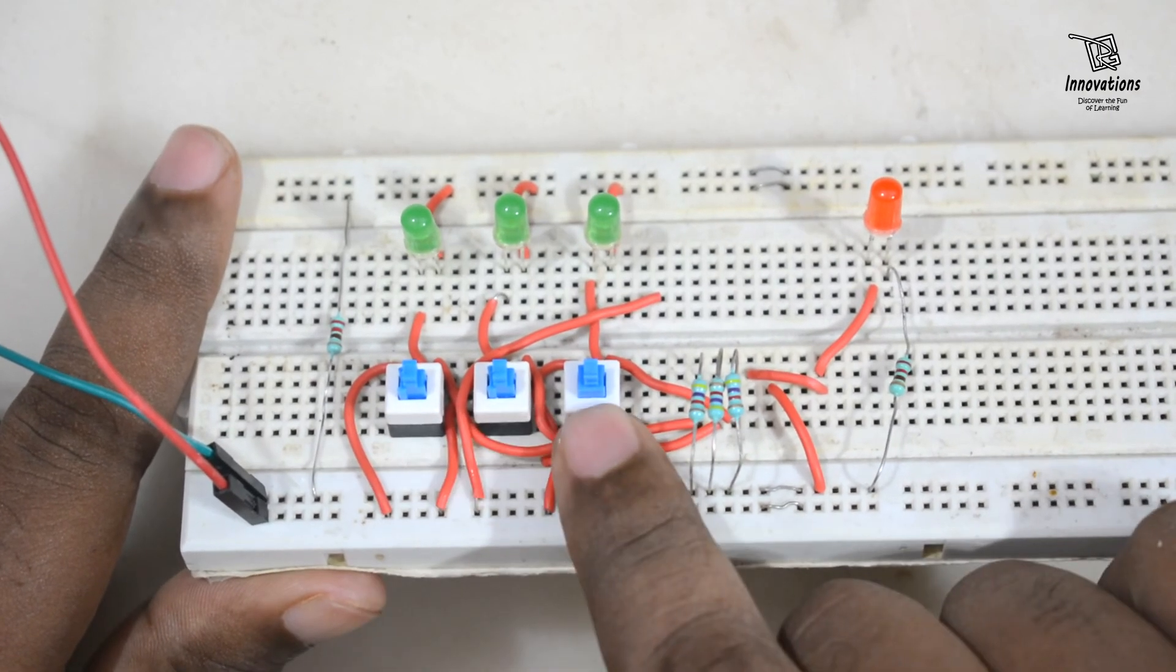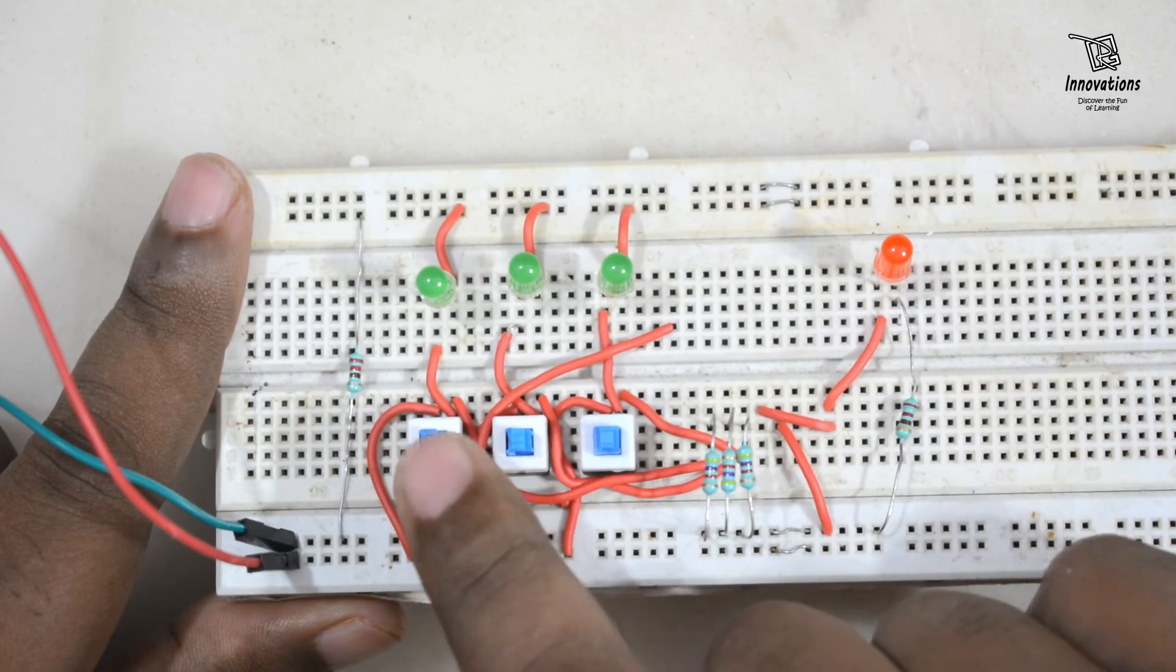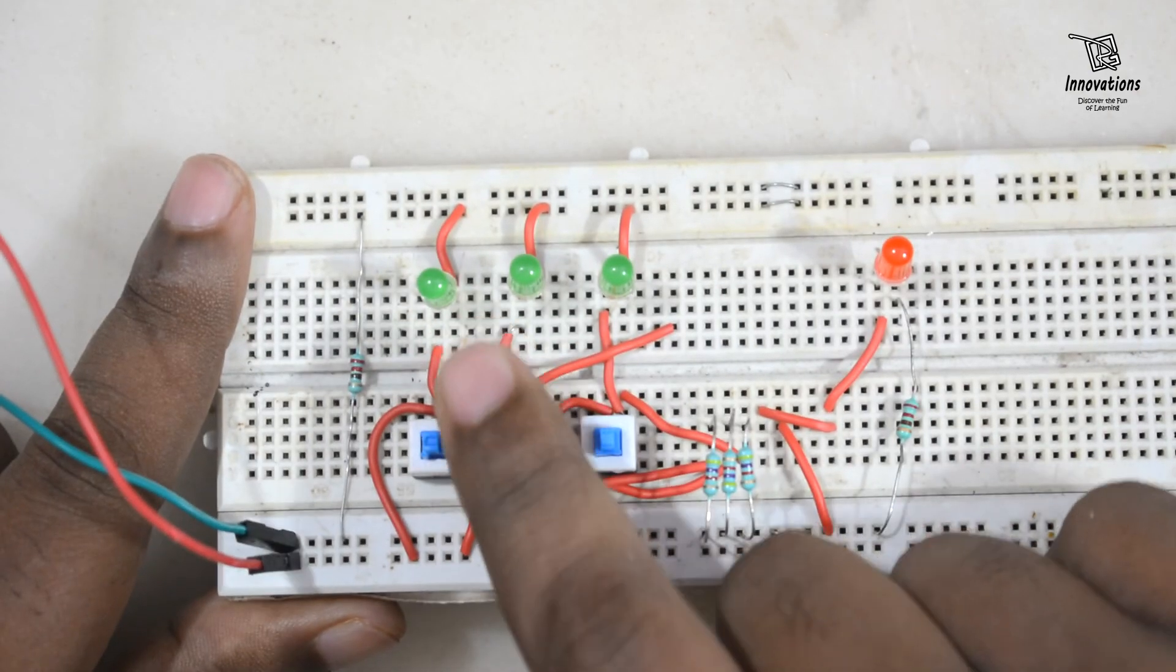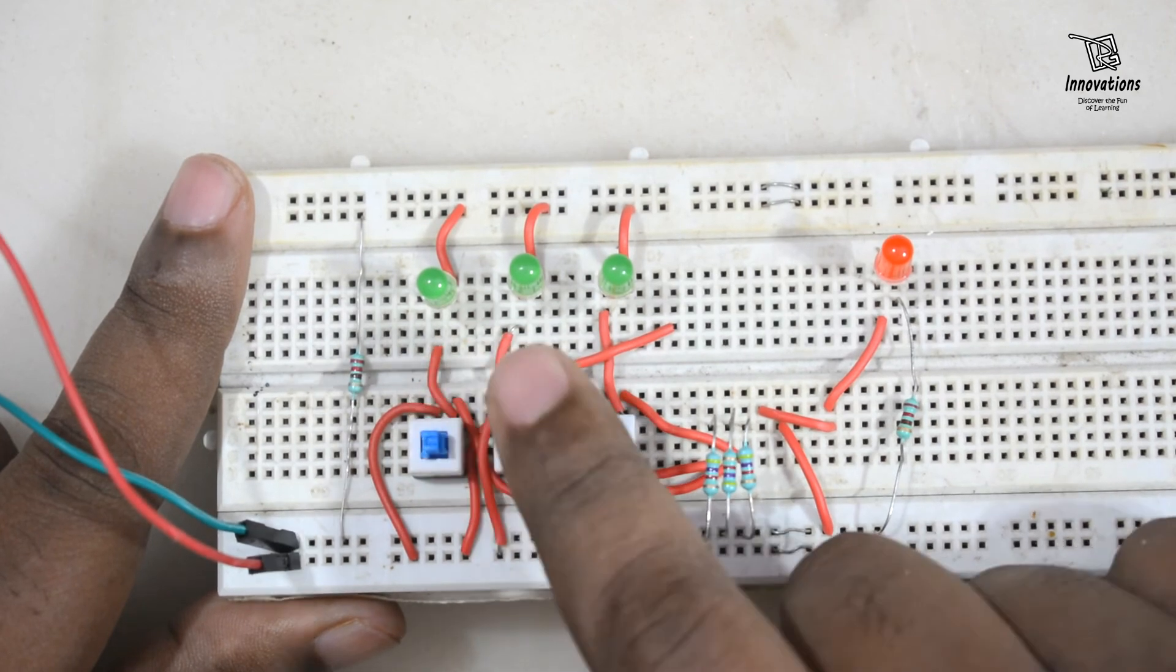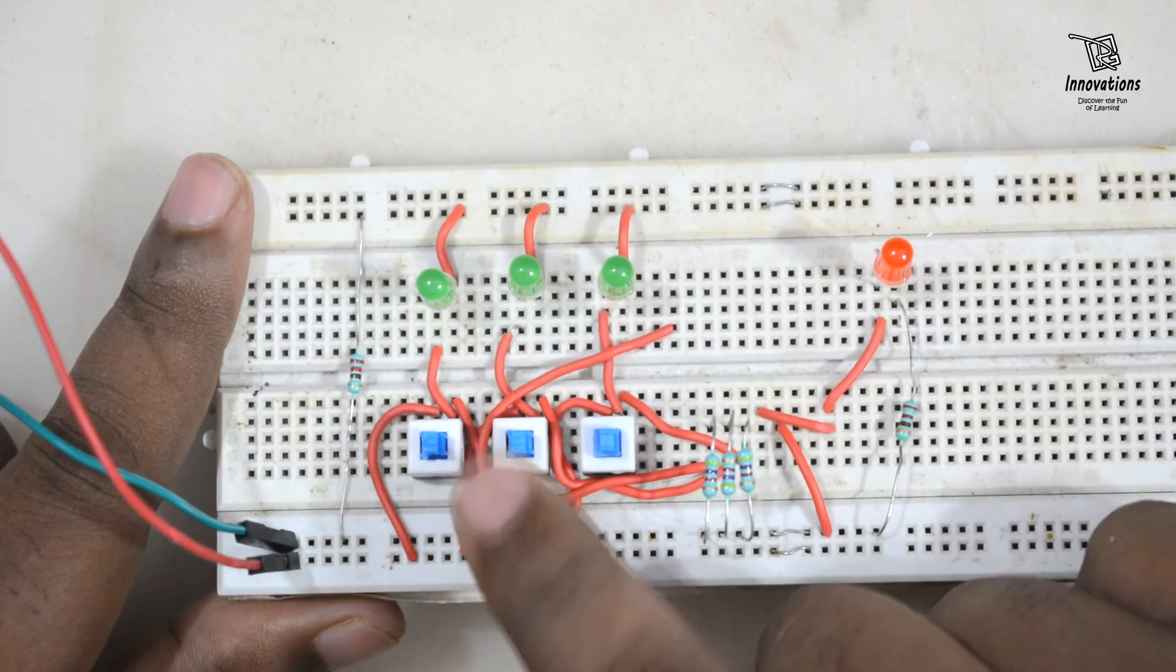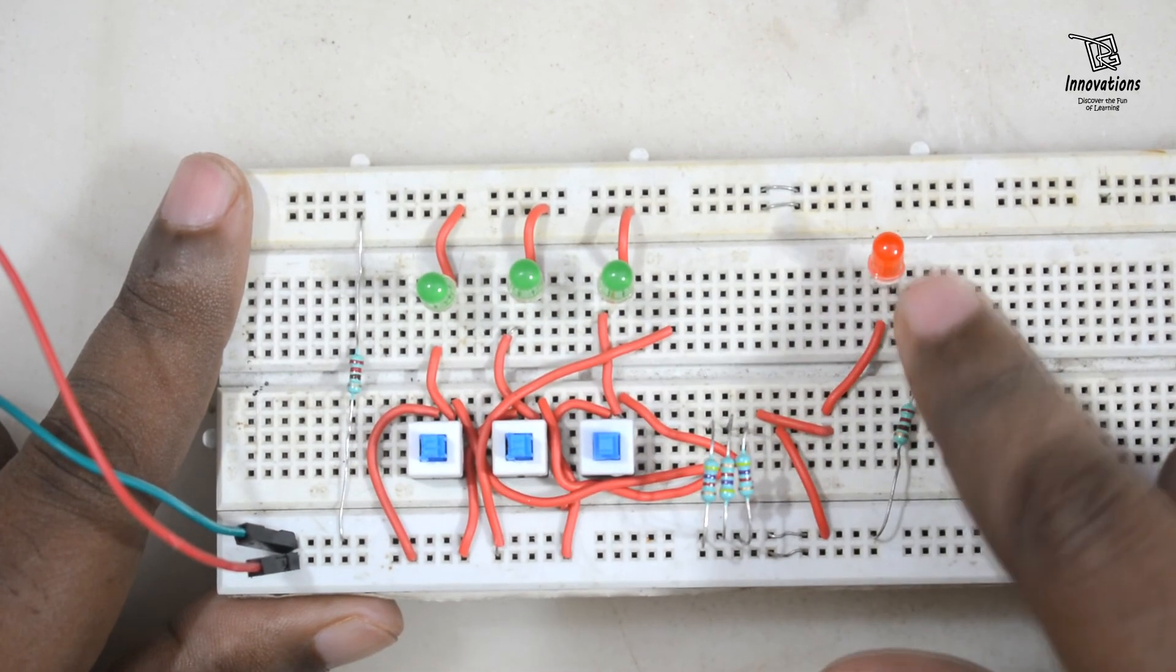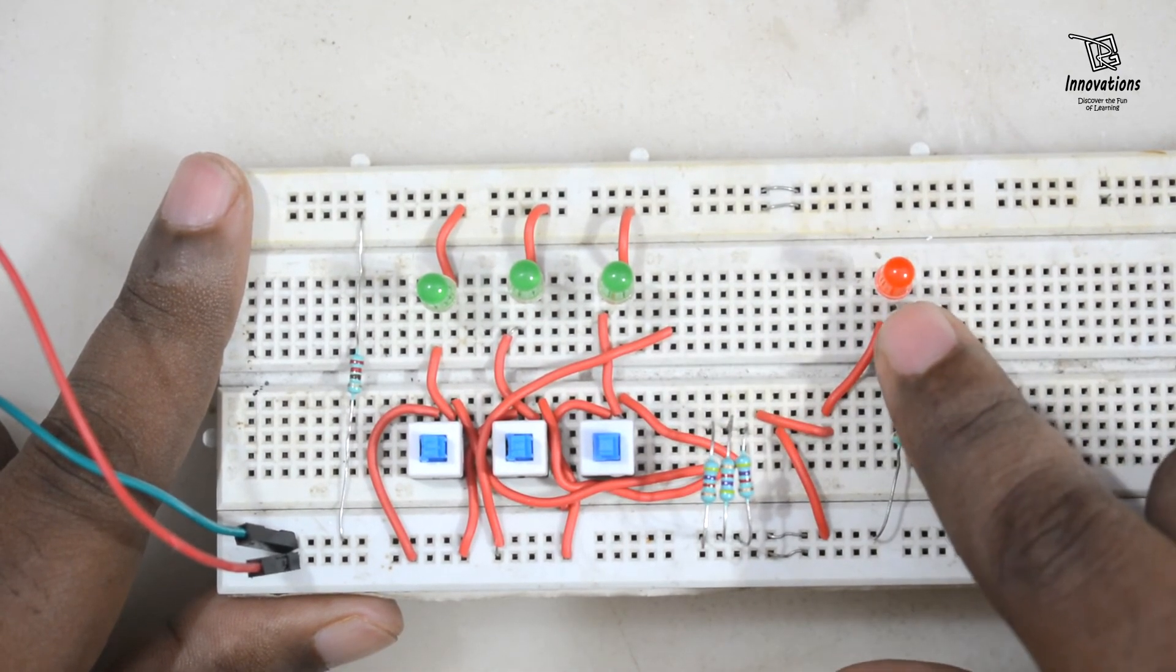Here are 3 switches which will act as the input of the IC. This is input A, input B and input C. These 3 LEDs are connected with the switches. When we press the switch the LEDs will turn on. When we turn off the switch the LEDs will not glow. When the LEDs glow that indicates input 1. When the LEDs do not glow it indicates that the input is 0. Here we have connected a red LED that indicates the output.